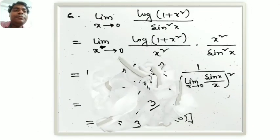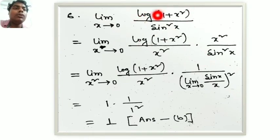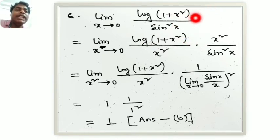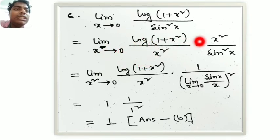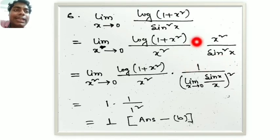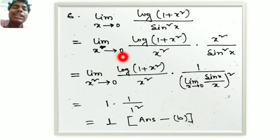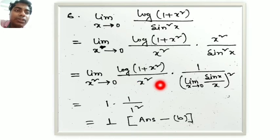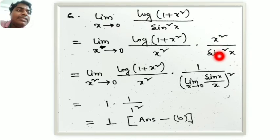In 2016, there is a question: limit x tends to 0 of log(1 plus x squared) by sin squared x. We rewrite as: limit x squared tends to 0 of log(1 plus x squared) by x squared, multiplied by x squared by sin squared x.